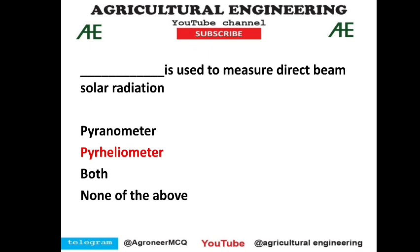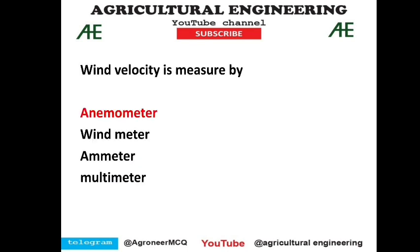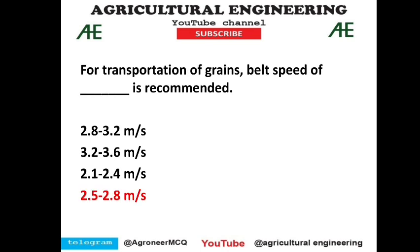Worm gears are used to transmit motion and power between non-parallel and non-intersecting shafts — option B is correct. A pyrheliometer is used to measure direct beam of solar radiation — option 2 is correct. A video on the difference between pyrheliometer and pyranometer has been discussed on our YouTube channel, and the question was directly asked from it in this paper.